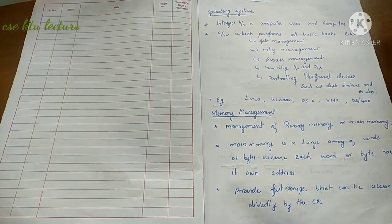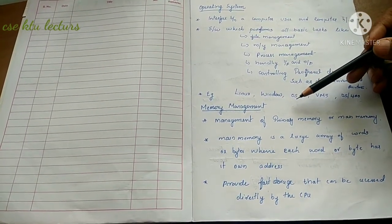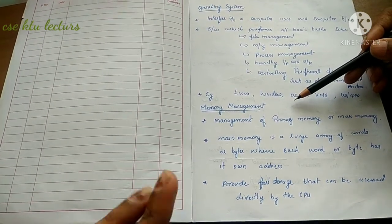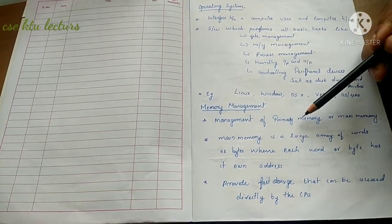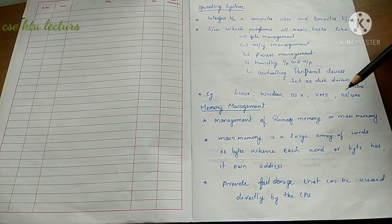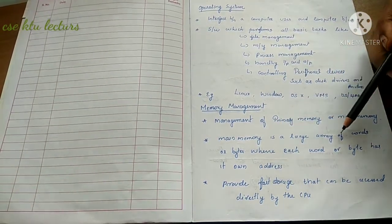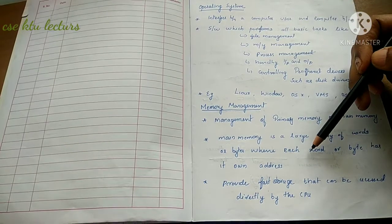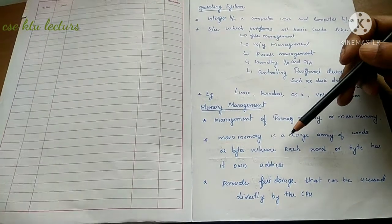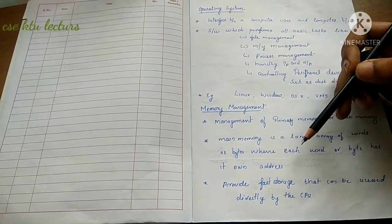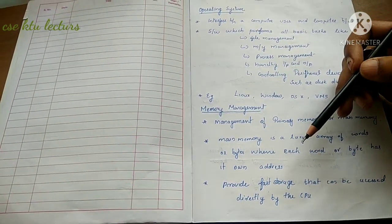The first task is memory management. Memory management is the management of primary memory, also called main memory. Primary memory is a large array of words and bytes, where each word or byte has a unique address. Memory is a space identified by an address, and everything stored in memory is accessed through these addresses.